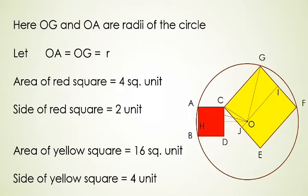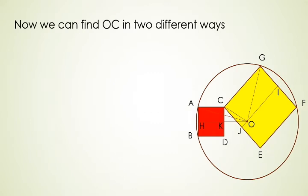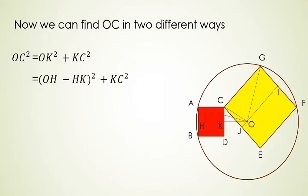Now we can find OC in two different ways. One with the help of this yellow square and another with the help of this red square. Let's find OC with the help of red square. So here we can see that triangle CKO is a right-angled triangle. Hence here OC square is equal to OK square plus KC square. That is hypotenuse square is equal to perpendicular square plus base square. Here we can write OK is equal to OH minus HK. Now again we see that triangle AOH is a right-angled triangle which can be written as AOH square minus AH square under root. And we substitute in our step and we get the next step again.